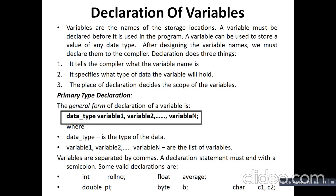Declaration of variables: variables are the names of storage locations, hence a variable must be declared before it is used in the program. A variable can be used to store a value of any data type. After designing the variable names, we must declare them to the compiler. Declaration does three things: first, it tells the compiler what the variable name is; second, it specifies what type of data the variable will hold; and third, the place of declaration decides the scope of the variable. Where we declare the variable determines how its scope varies.